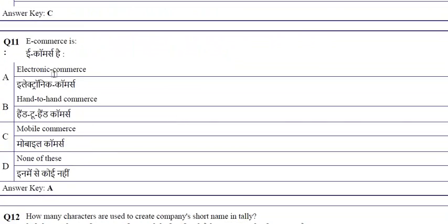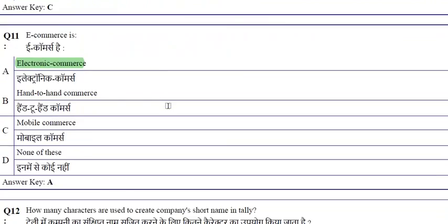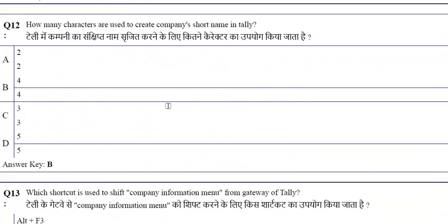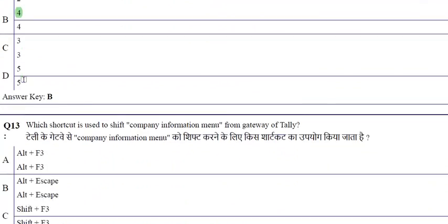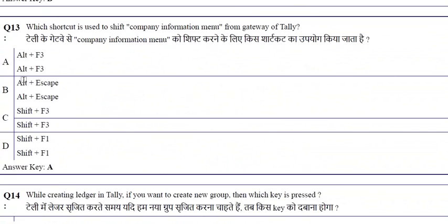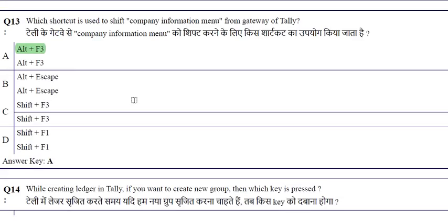E-commerce stands for electronic commerce. In Tally, 4 characters are used to create a company's short name. The shortcut ALT + F3 is used to shift the company's information menu from the gateway of Tally.